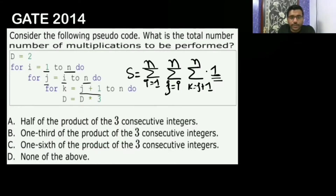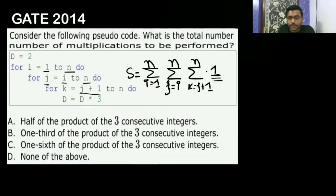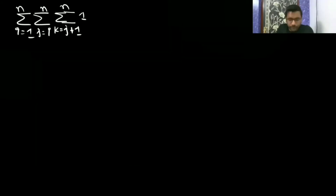So we get: sigma i equal to 1 to n, then sigma j equal to i till n, and here sigma k equal to j+1 till n, of 1.